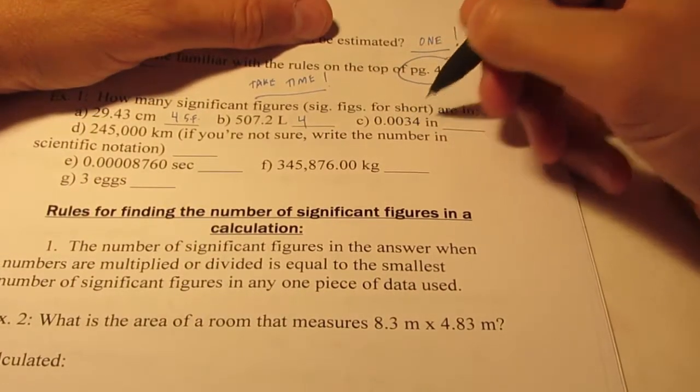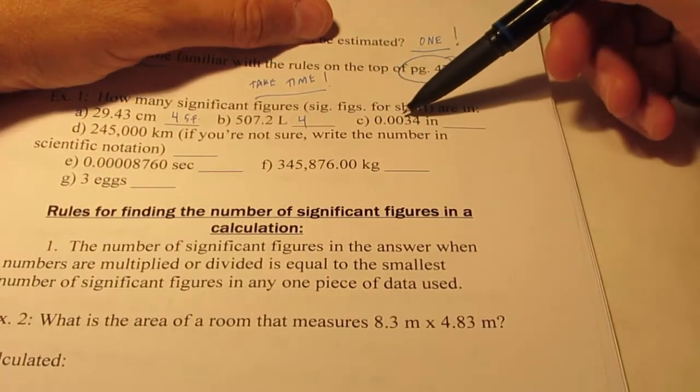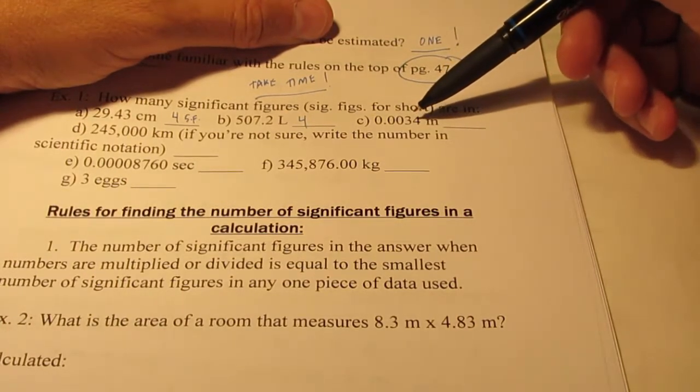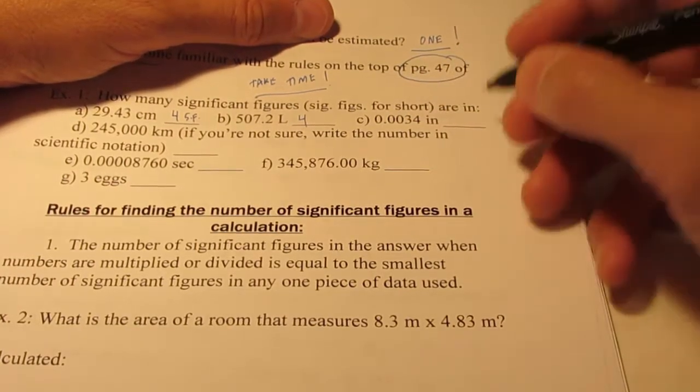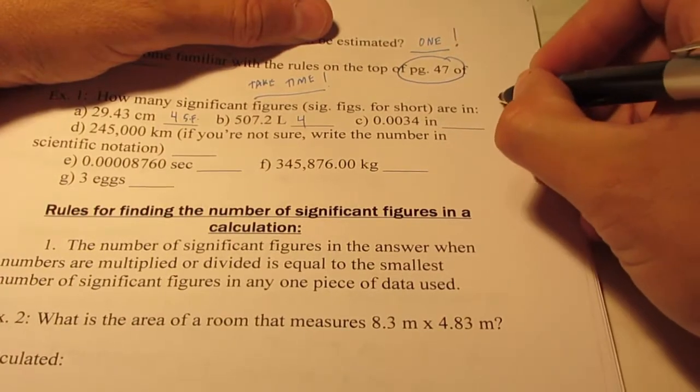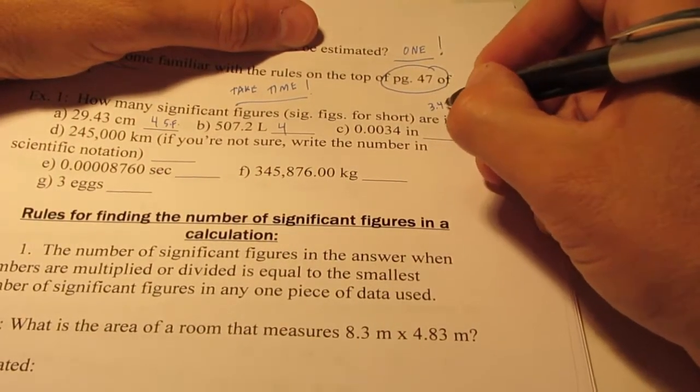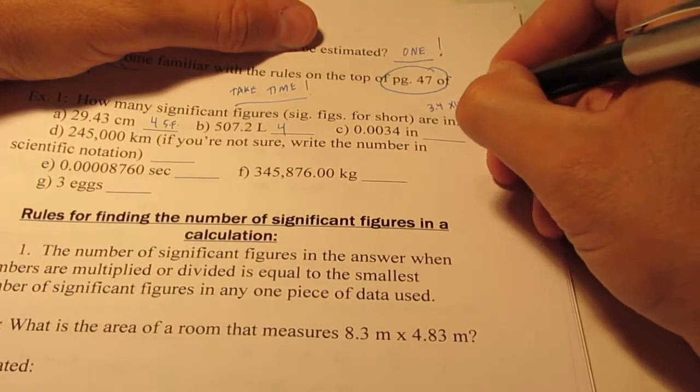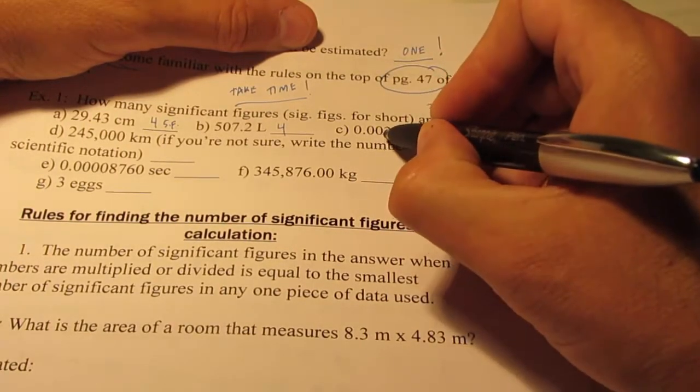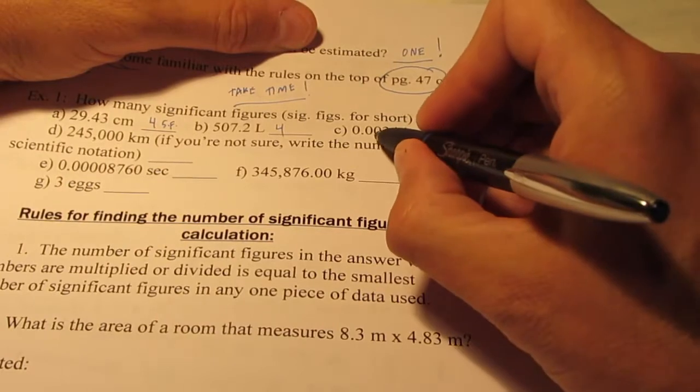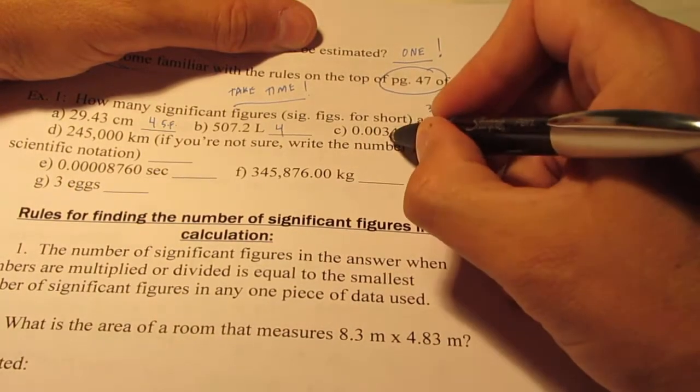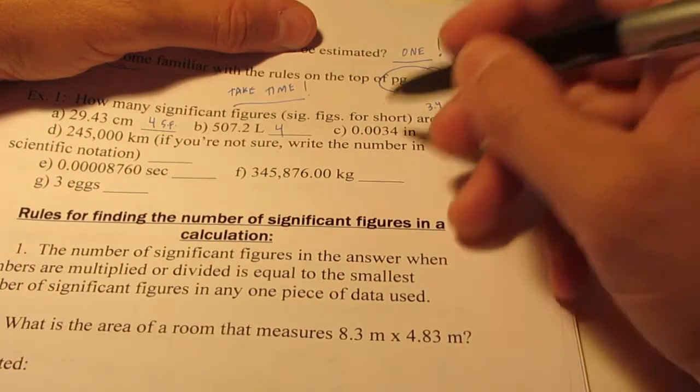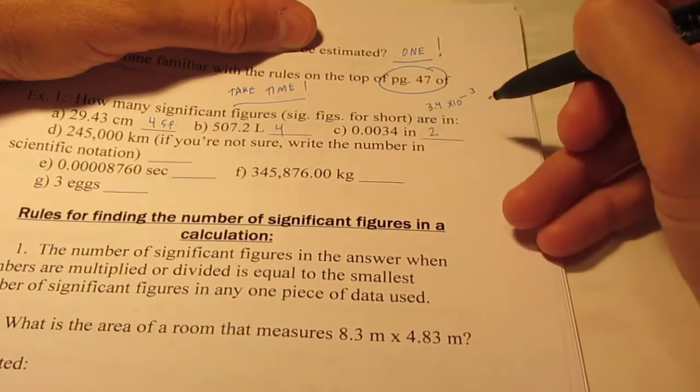How about letter C, 0.0034. Now these zeroes are before non-zero digits in a measurement, and we said that when that happens, they are not significant. Can't I write this number as 3.4 times ten to the negative third. So those zeroes are not needed. So that measurement, kiddos, only has two significant figures. Those zeroes, none of them, are significant.